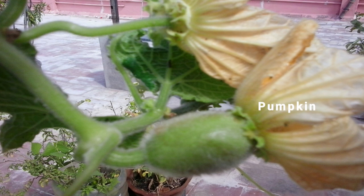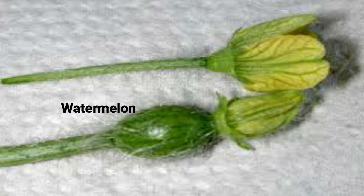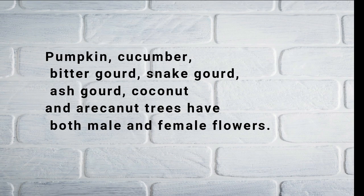An example is pumpkin — it has both male and female flowers. The bulge region identifies the female flower. Similarly, watermelon has male and female flowers — males have no bulge and females have a bulge at the bottom. Pumpkin, cucumber, bitter gourd, snake gourd, ash gourd, coconut, and rain trees all have both male and female flowers.